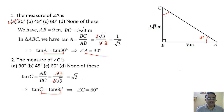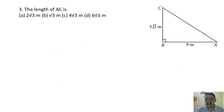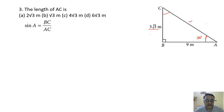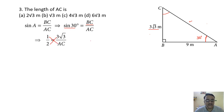Question 3: Find AC. Using sin A where angle A = 30°: sin 30° = BC/AC: 1/2 = 3√3/AC. Cross multiplying gives AC = 6√3. The correct option is option D.